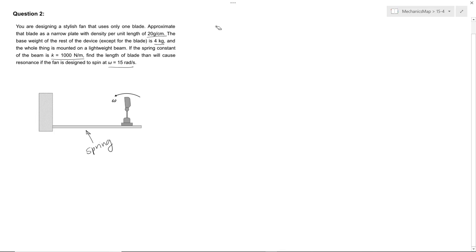So we're going to define the total weight of the device as the mass of the base plus the mass of the blade. We're given a k constant of 1,000 newtons per meter, and so we can write that the natural frequency of this system is 1,000 newtons per meter over 4 kilograms plus the mass of the fan blade.